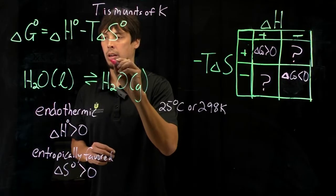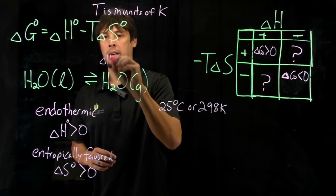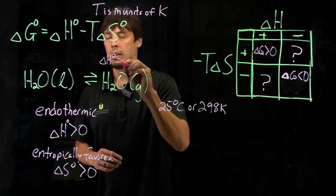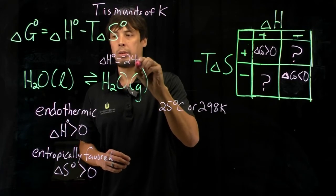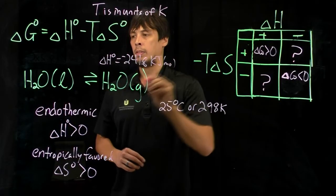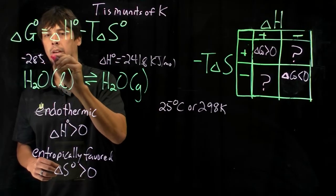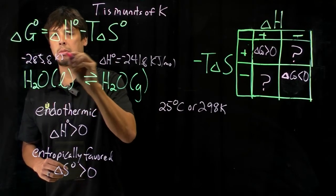So water as a gas has a delta H of negative 241.8 kilojoules per mole, whereas liquid it's negative 285.8 kilojoules per mole.